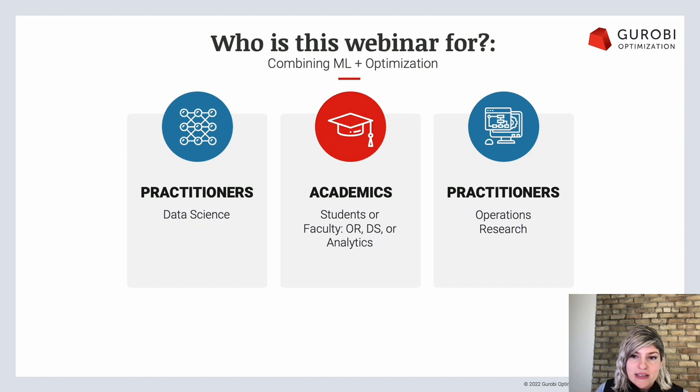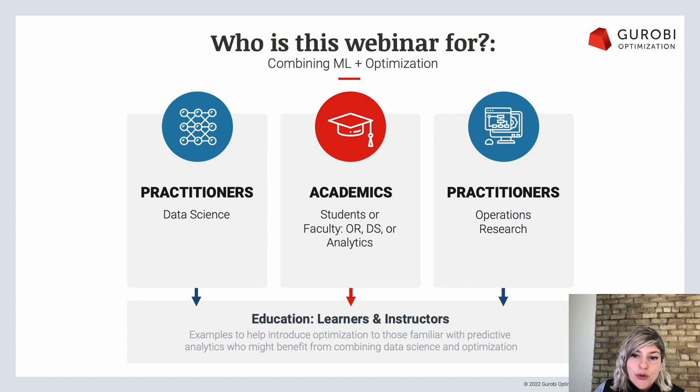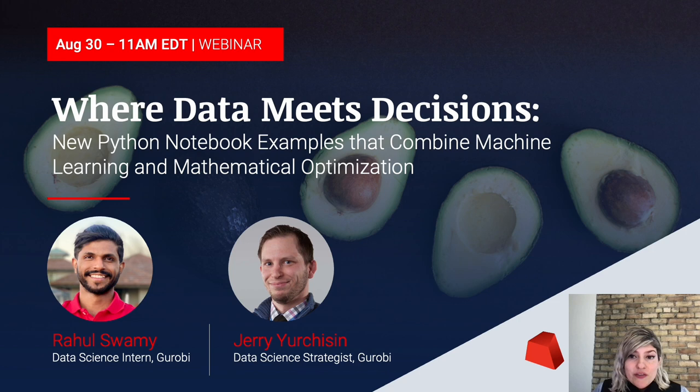As we dive into the examples, sit back and consider if you might be able to help a colleague, team, or friend get started with optimization using some of these free educational resources. Anyone who's interested in either learning about or instructing other problem solvers on the benefits of combining data science and optimization will be able to leverage these new examples. They're part of our example library online at gurobi.com and are available for free use in classroom or training contexts. Today's webinar is part of a series shining the spotlight on our academic community and the new educational resources we've been developing.